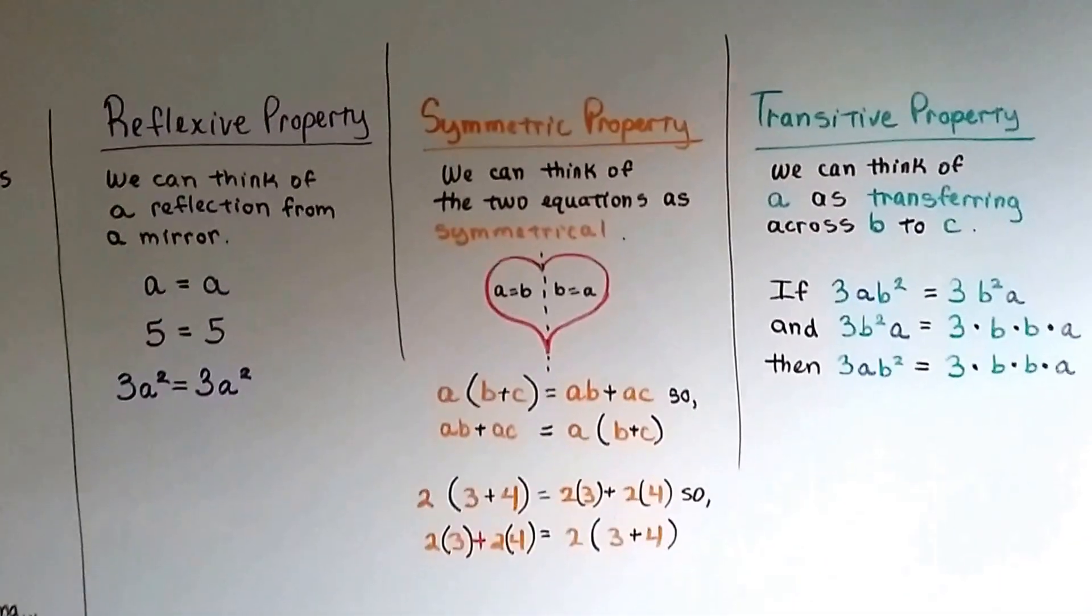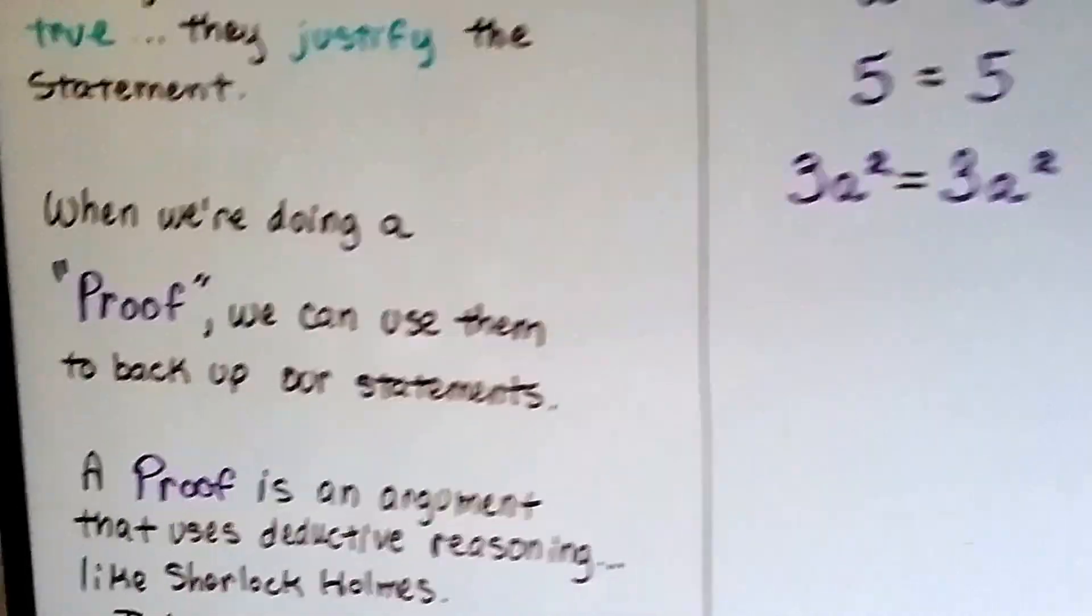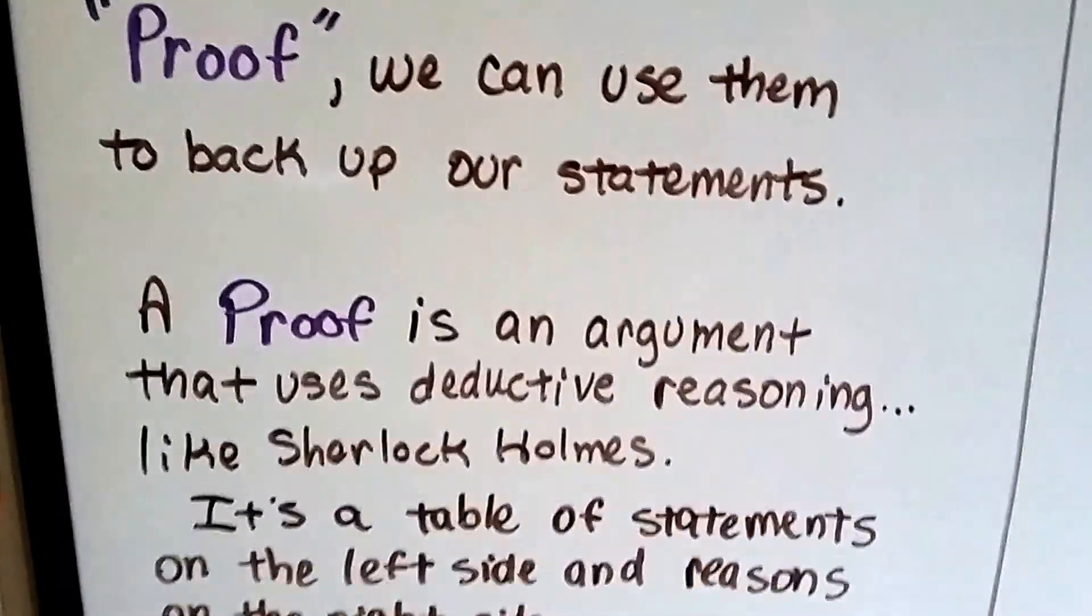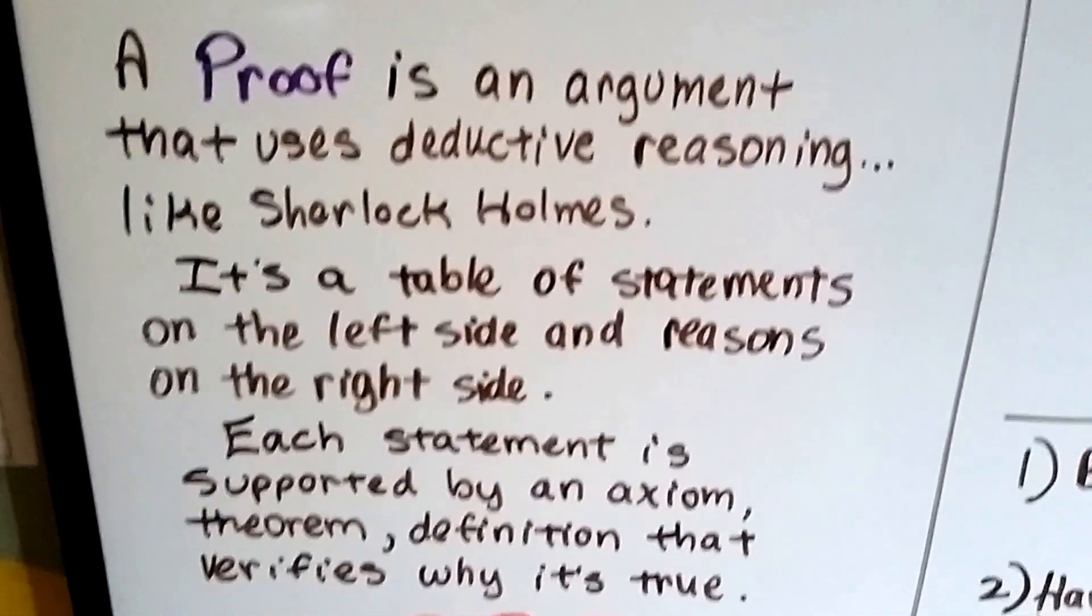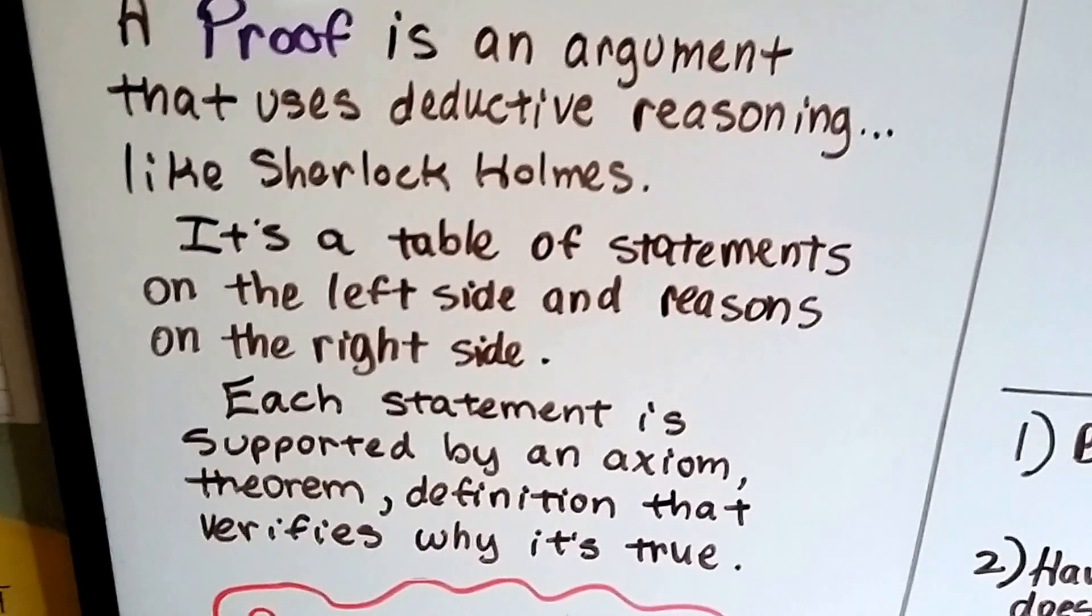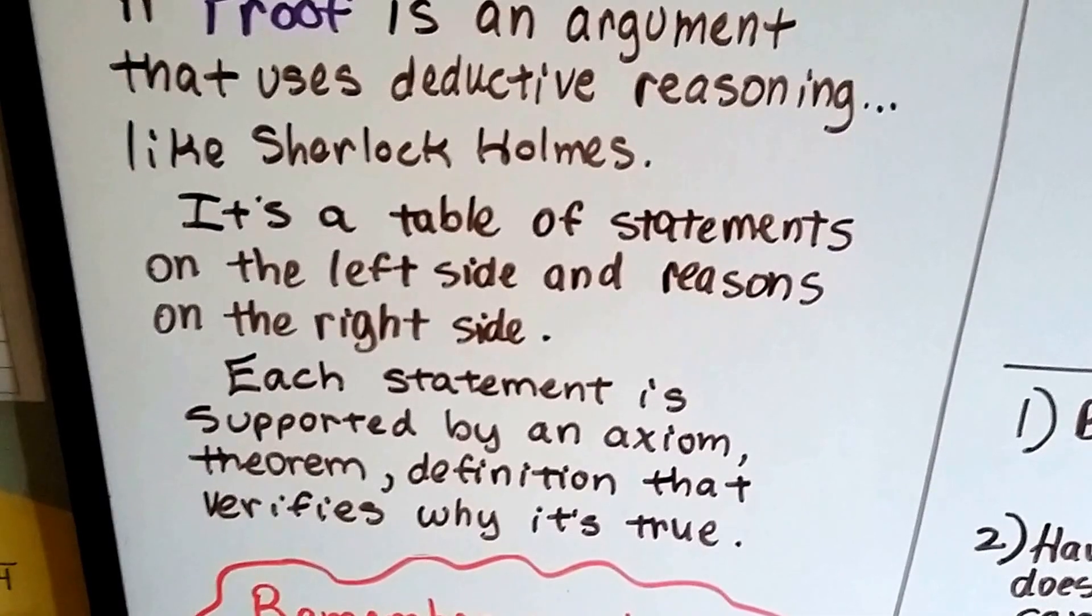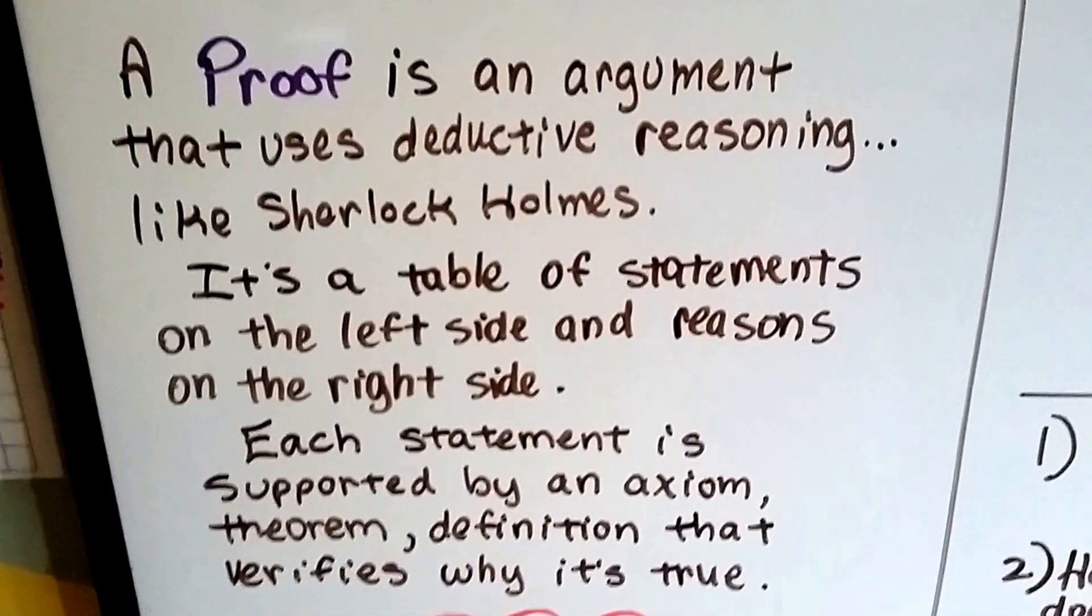Now what good are these? Why do we need to know these properties of equality? Well, when we're doing a proof, we can use them to back up our statements. A proof is an argument that uses deductive reasoning, like Sherlock Holmes. It's a table of statements on the left side and reasons on the right side. And each statement is supported by an axiom or postulate, a theorem, a definition that verifies why it's true.